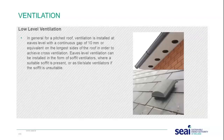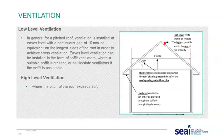This provides good cross ventilation and avoids creating pockets of stagnant air. Ventilation in the roof space should be checked. For low level ventilation on a pitched roof, ventilation is installed at eaves level with a continuous gap of 10 millimetres or equivalent on the longest side of the roof. Eaves level ventilation can be installed as soffit ventilators or as tile plate ventilators if the soffit is unsuitable.